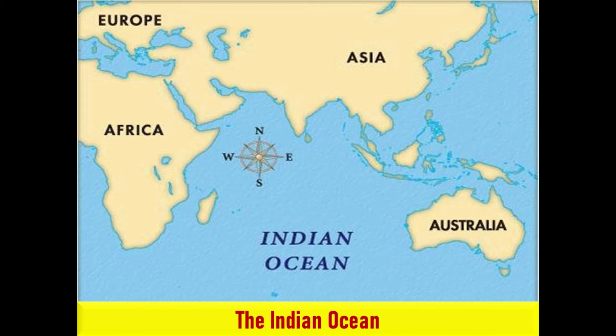The Indian Ocean is the third largest of the world's oceanic divisions. It is bounded by Asia to the north, Africa to the west, and Australia to the east. To the south it is bounded by the Southern Ocean or Antarctica, depending on the definition in use. Along its core, the Indian Ocean has some large marginal or regional seas such as the Arabian Sea, the Lakshadweep Sea, the Somali Sea, the Bay of Bengal, and the Andaman Sea. It is the warmest ocean in the world. The Indian Ocean includes the Red Sea and the Persian Gulf. Significant islands include Madagascar, the Seychelles, and Sri Lanka.